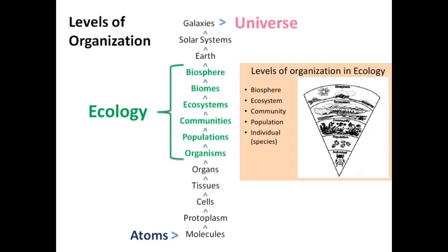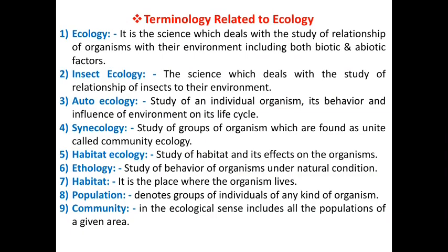If you see the levels of organization in the universe, insect ecology consists of: biosphere, biomass, ecosystem, communities, populations and organism. These six concepts are included in ecology or simply insect ecology. These are some of the terminology related to insect ecology.